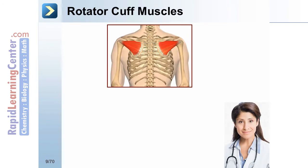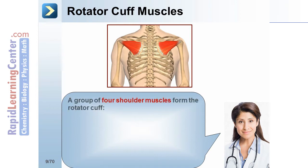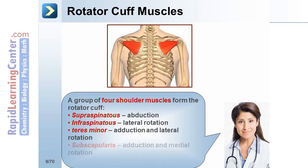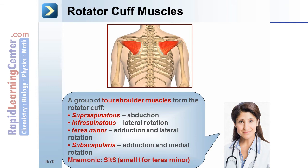Now let's take a look at topics related to muscle that are likely to show up on the USMLE Step 1 exam. Let's start by looking at the rotator cuff muscles. A group of four shoulder muscles form the rotator cuff. You can remember these with the mnemonic SITS, with a small 't' for teres minor.